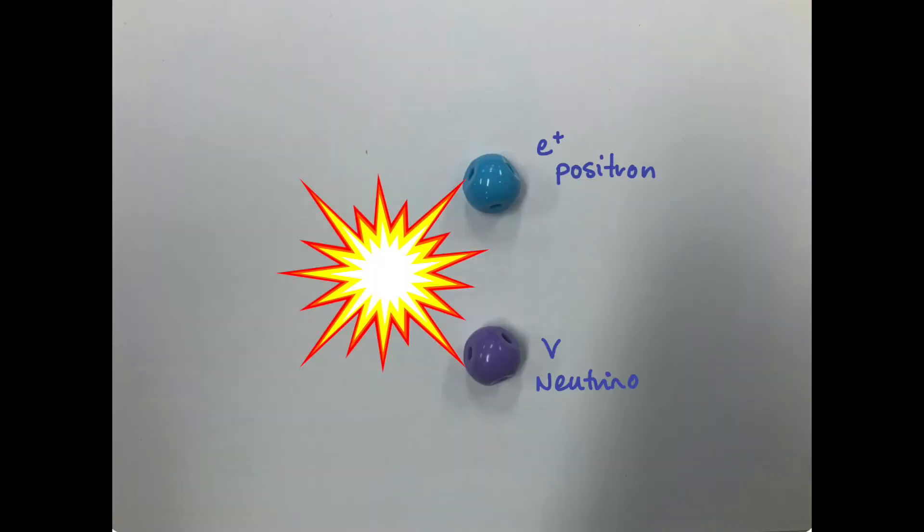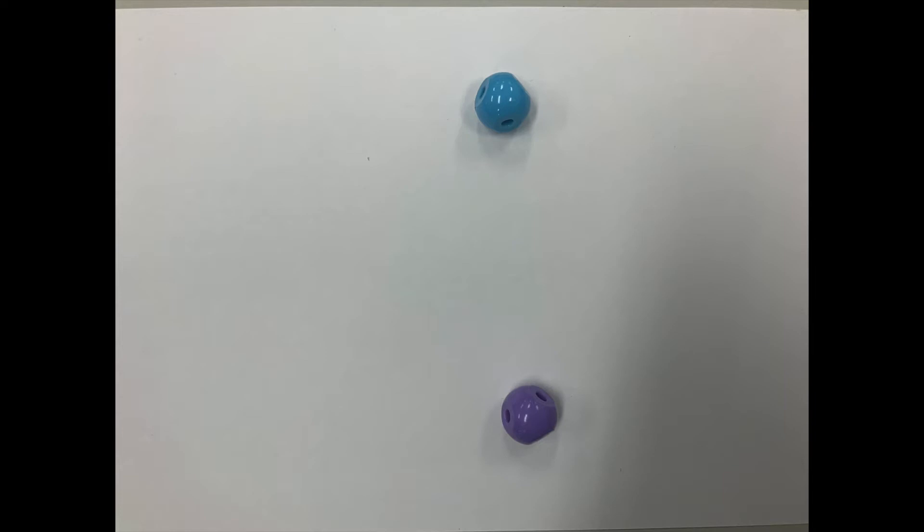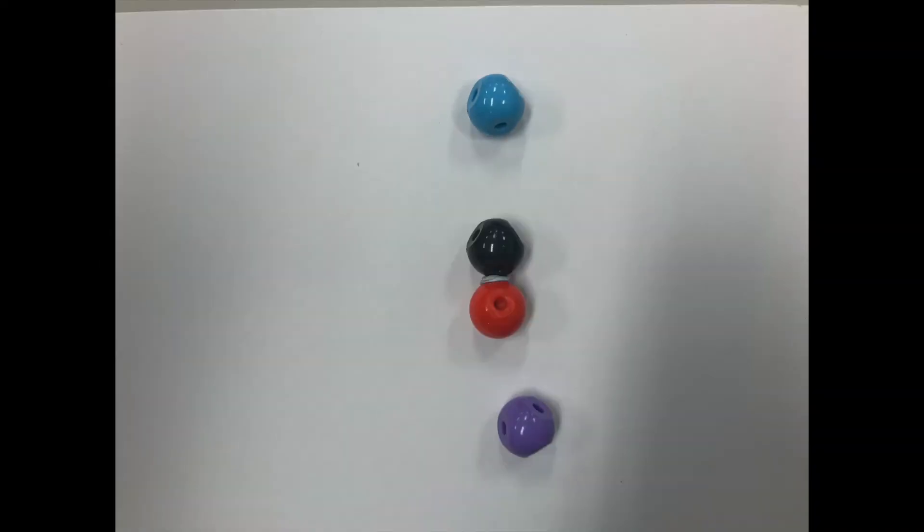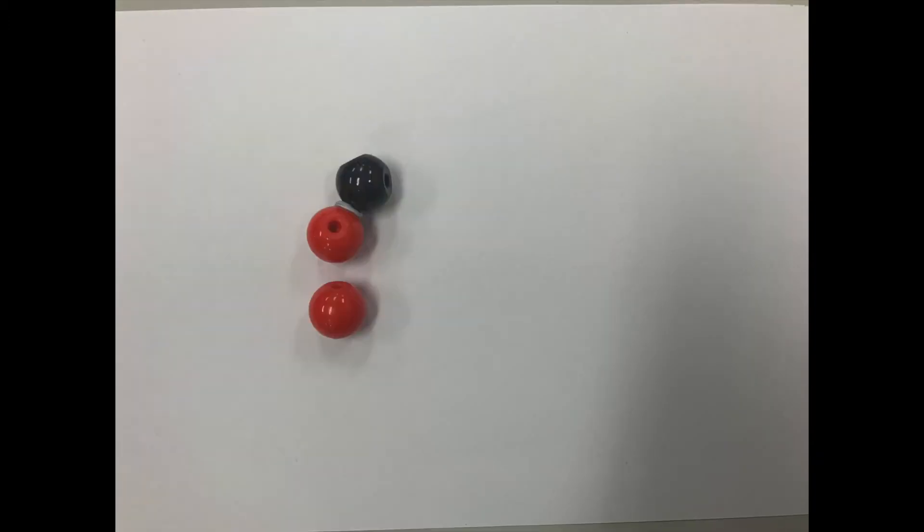The proton-proton chain begins with two hydrogen nuclei, or protons, that collide, releasing a neutron and a neutrino and forming heavy hydrogen, also known as deuterium. The deuterium then collides with another proton, releasing a gamma ray and forming light helium.